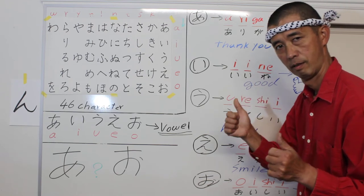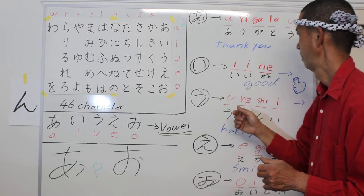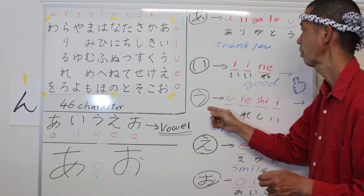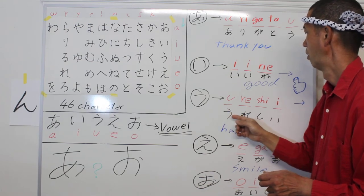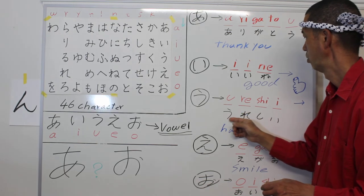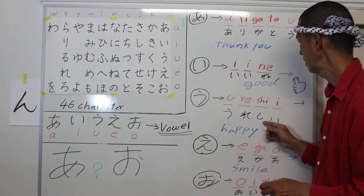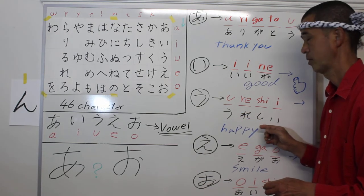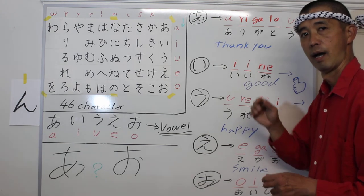Good. U, for example, ureshii. Ureshii means happy.